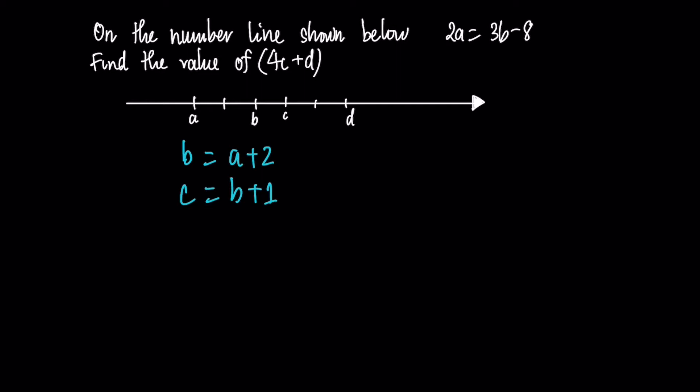Finally, we have c is 2 units less than d, therefore we have d equal to c plus 2. By using this information, we are able to find the value of c and d.